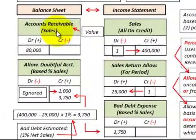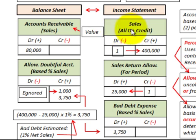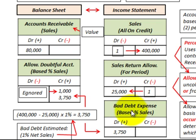Here we're going to look at how we would record bad debt expense. We have accounts receivable on our balance sheet and sales on our income statement. Not all accounts receivable will be collectible, so we're going to have some bad debt expense against the uncollectible amount. We have two different methods to determine that bad debt expense.